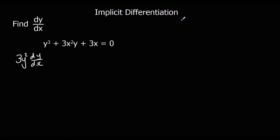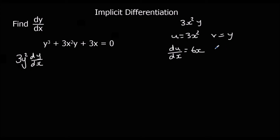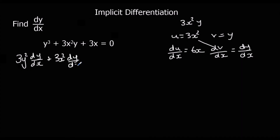Here we've got a product rule on 3x squared y. We say u is 3x squared and v is y, so du/dx is 6x and dv/dx is dy/dx. So u dv/dx is 3x squared dy/dx, plus v du/dx gives 6xy. And 3x differentiated is 3, and it equals 0.